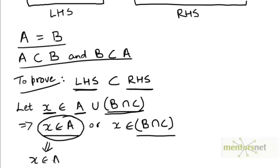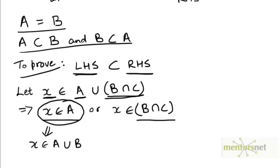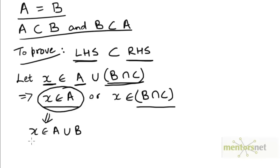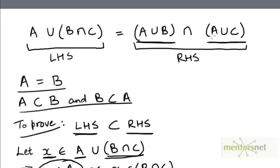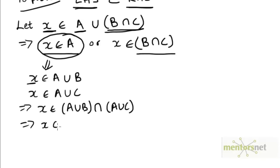Now if x belongs to A, then x belongs to A union B, and x also belongs to A union C. This means x is an element common to both of these sets, which is what we wanted to prove. Since x is common to both sets, x must also belong to their intersection. So x belongs to (A union B) intersection (A union C) — that is, x belongs to the set on the right hand side.